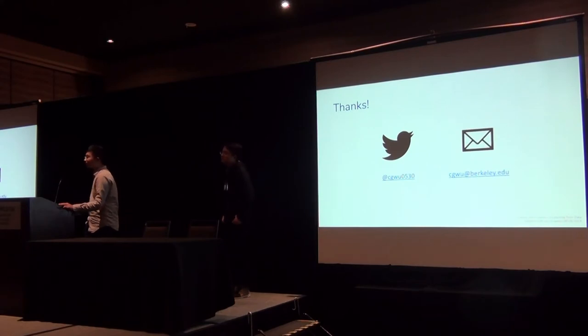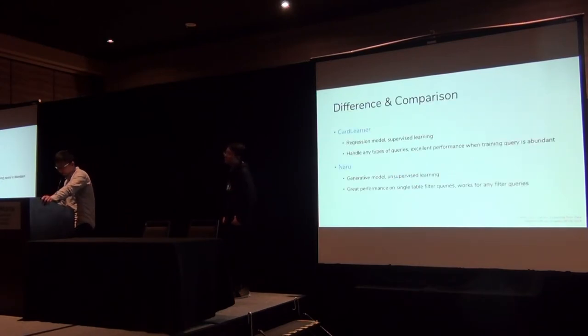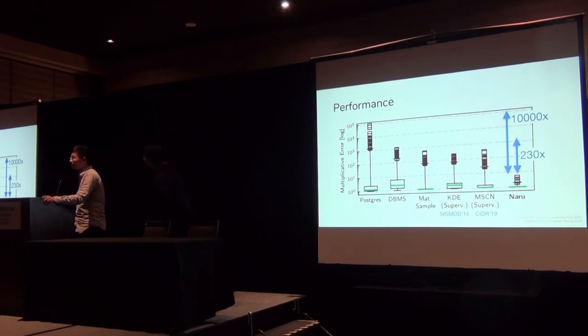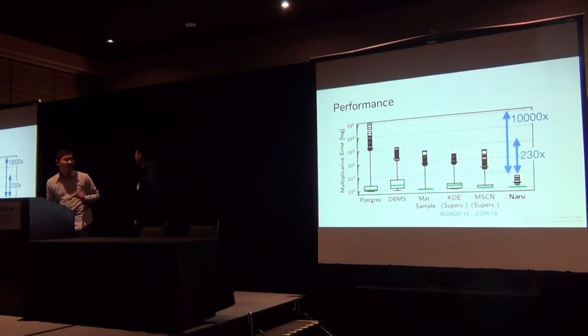Second, for the MSCN numbers that you have, why are they so much higher than what are reported in the MSCN paper? I think I have to look it up. I don't have data on top of that. So it's much better than the MSCN, right? If you remember this is on the DMV dataset or Conviva, whichever.